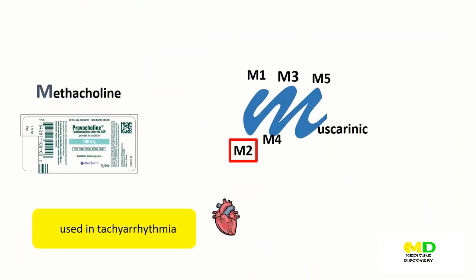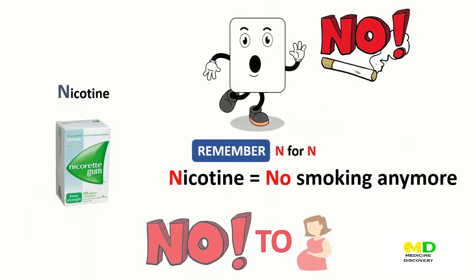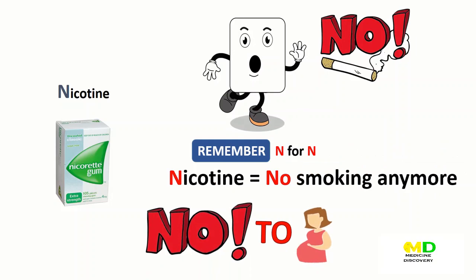Methacholine acts on the myocardium via muscarinic receptor M2 and is used in tachyarrhythmia. Nicotine is used to aid in smoking cessation in adults. Using a controlled amount of nicotine helps reduce nicotine withdrawal symptoms when you quit smoking. Do not use nicotine if you are pregnant or breastfeeding unless your doctor has told you to.